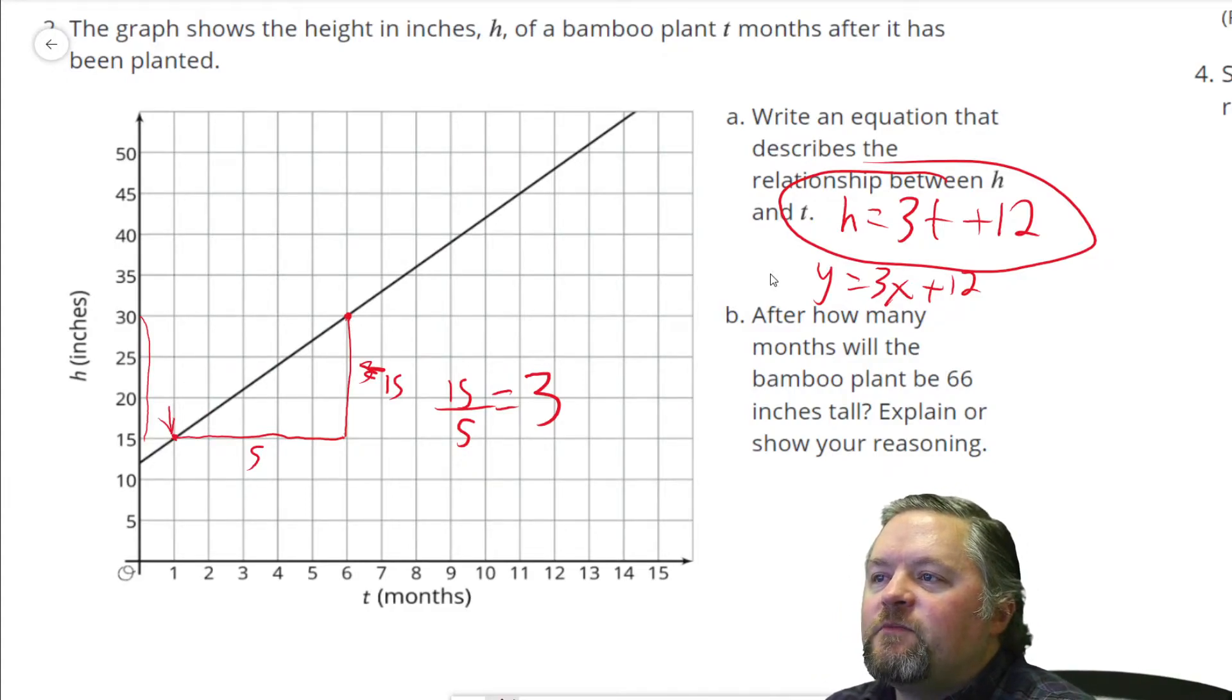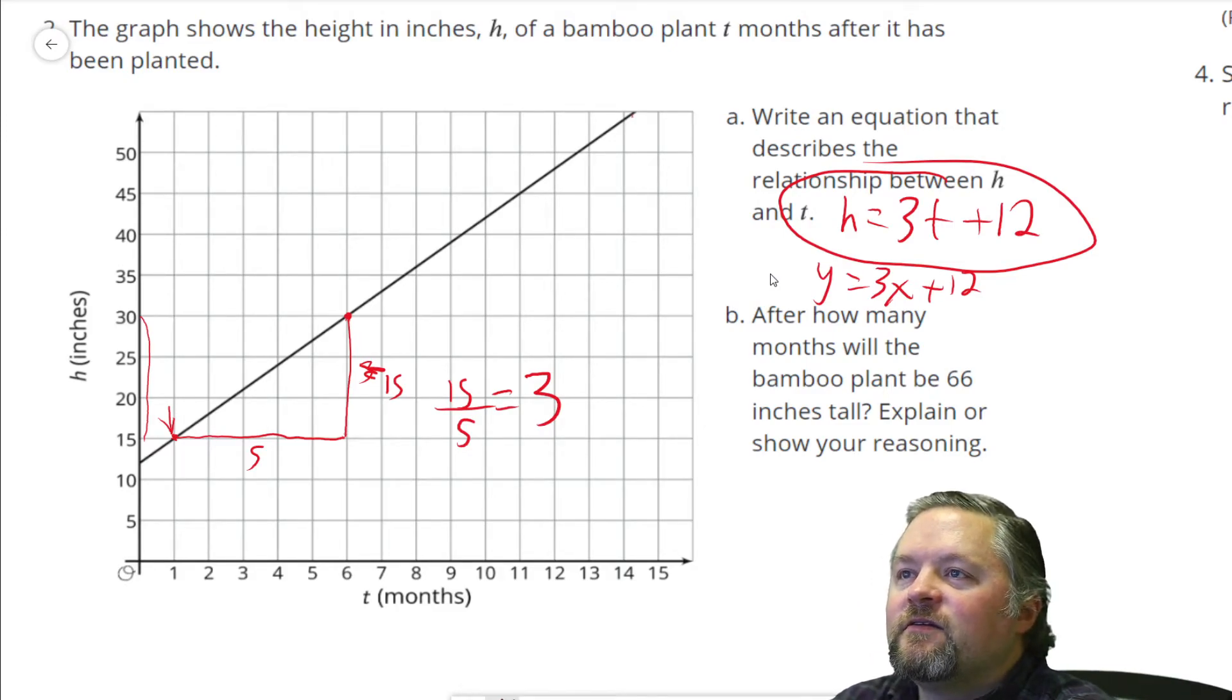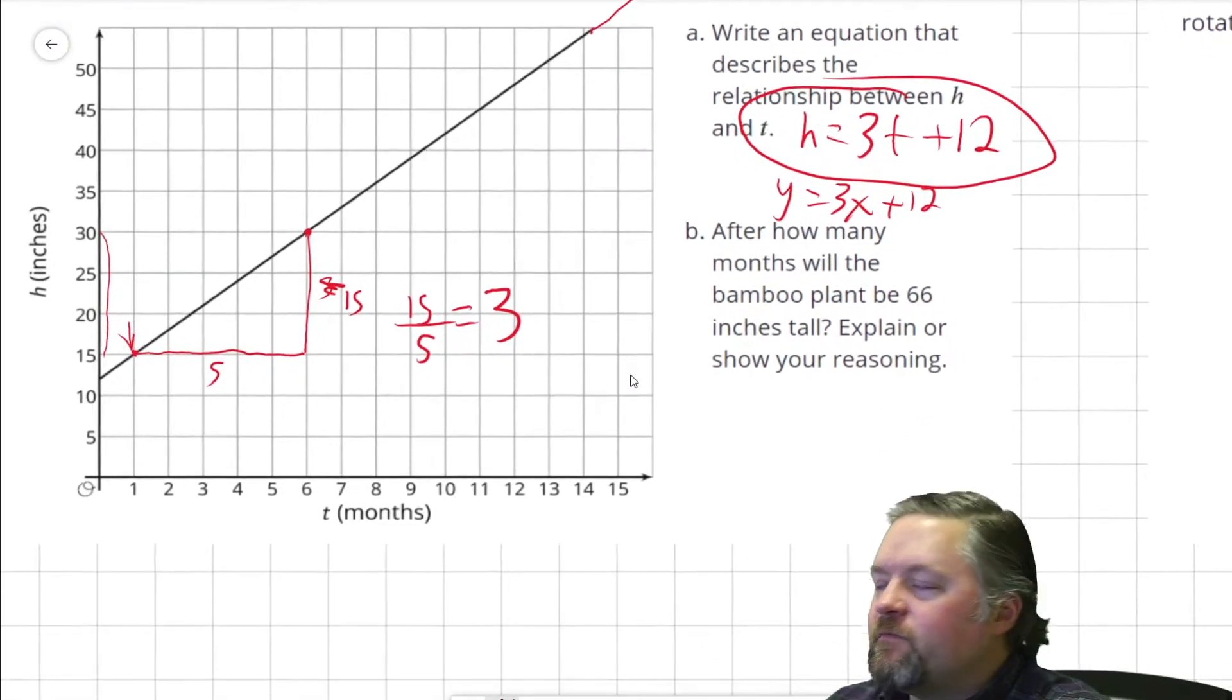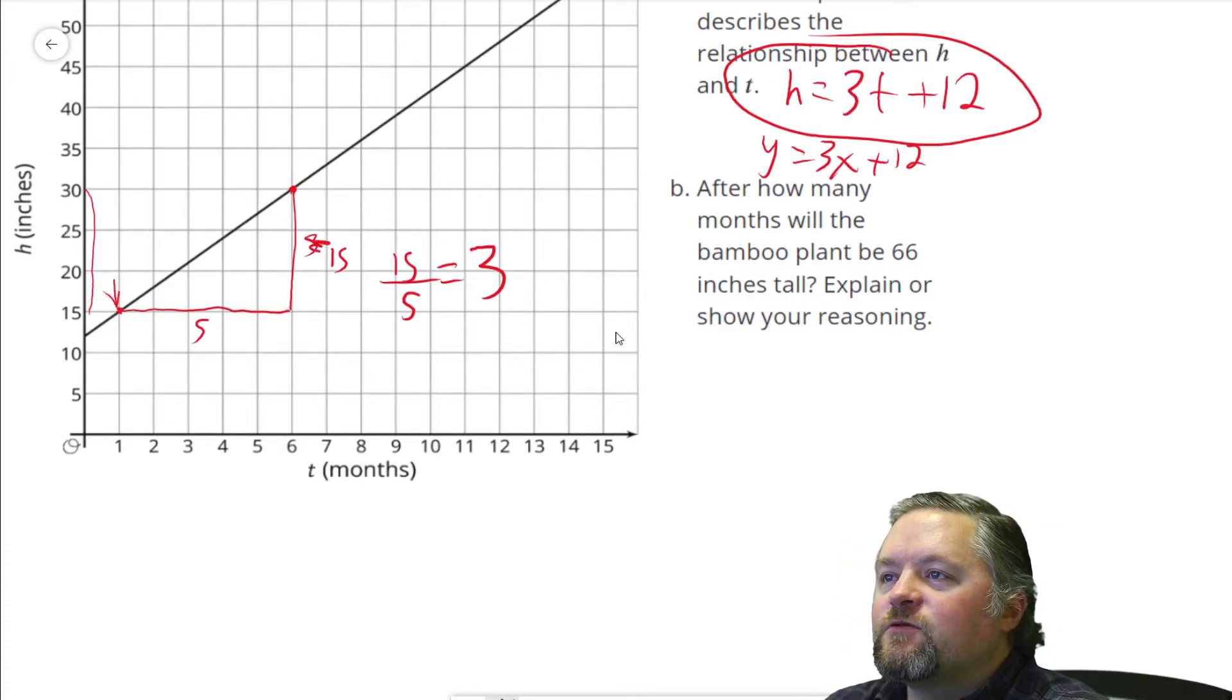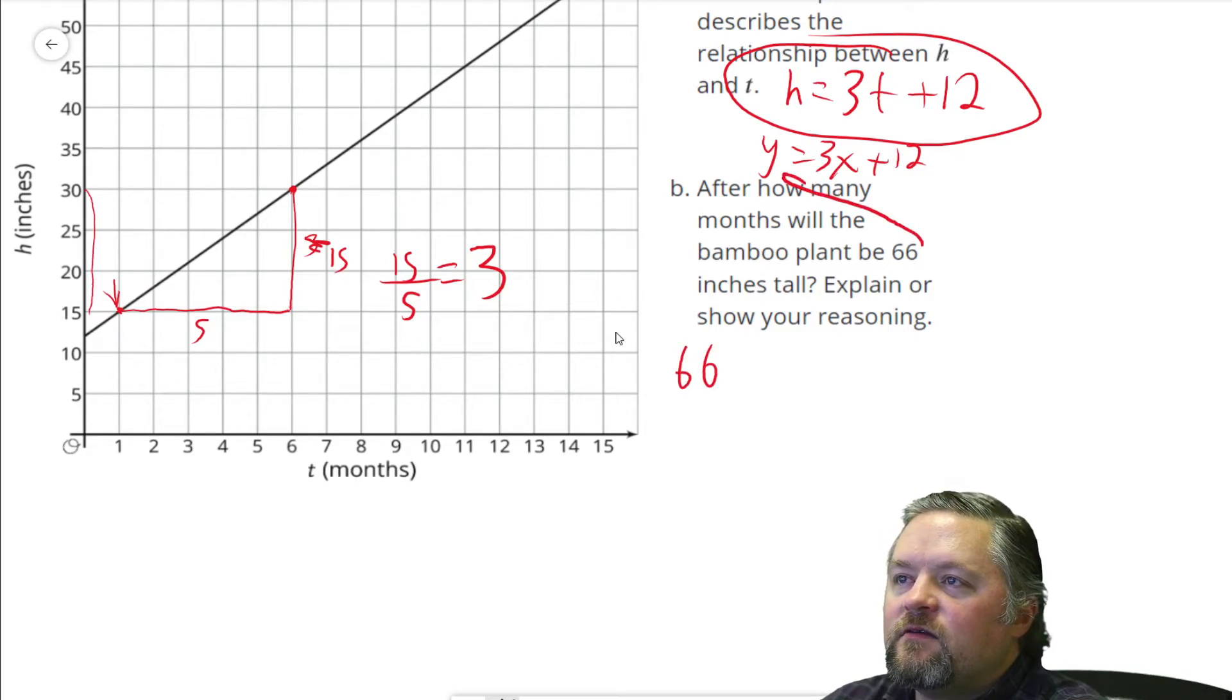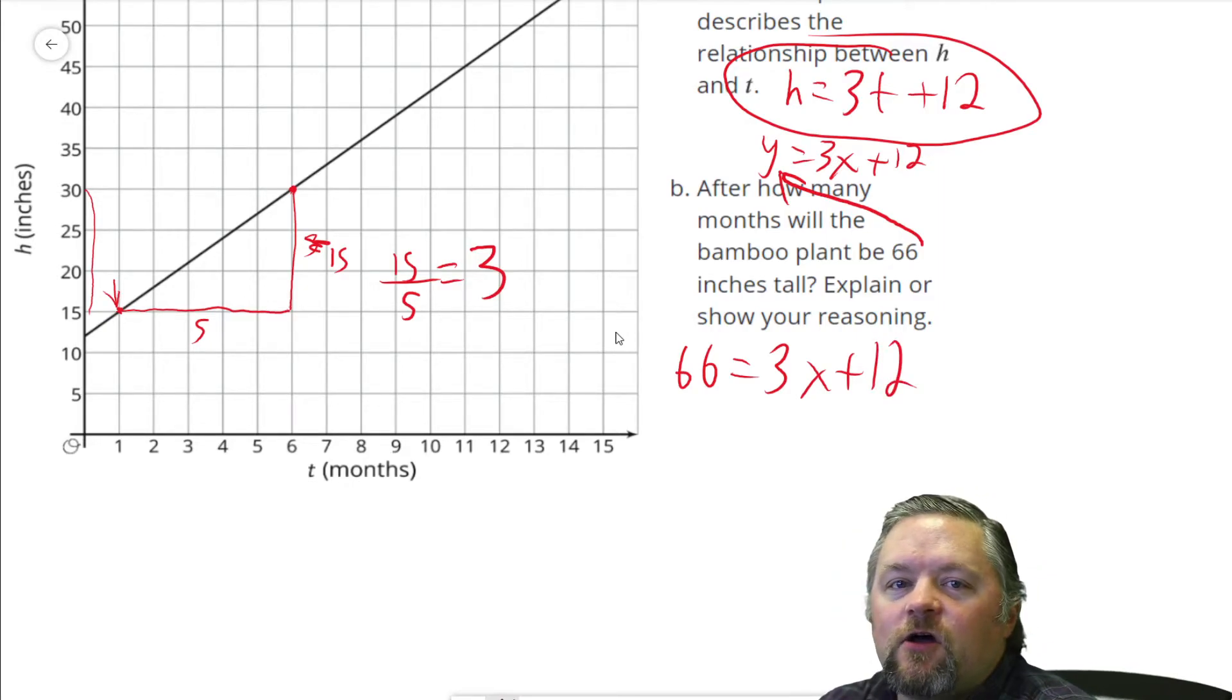After how many months will the bamboo plant be 66 inches tall? Okay, 66 inches tall, but this graph doesn't go up that high. Who designed this stupid thing? Well we could try and extend this and figure out exactly where it is, but let's just use our equation to figure that out. Move this up a little bit so we've got more space to work. After how many months will it be 66 inches tall? That's a height, which means that's a y value, so we want to just substitute that in. 66 equals 3x plus 12. Okay, now we have an equation, we just have to solve for x.